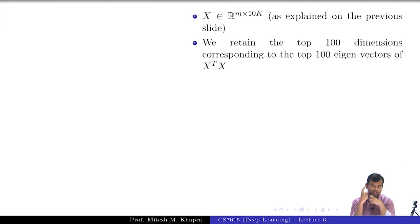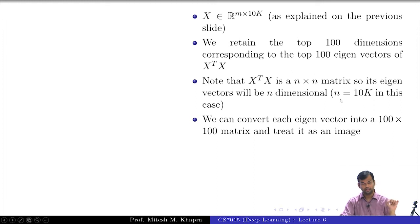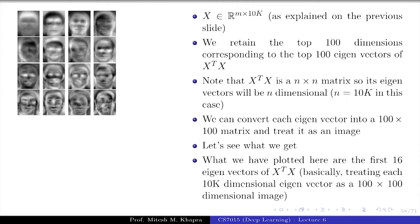These vectors should have some interpretation - they should be connected to faces in some way. Otherwise, how will you construct a face from taking a linear combination of some random vectors? You can convert each eigenvector into a 100 × 100 matrix and treat it as an image. Let's see what we get. This is what we get.